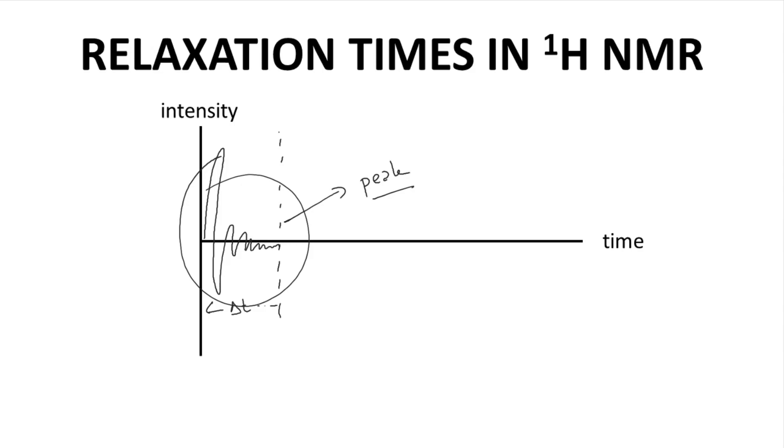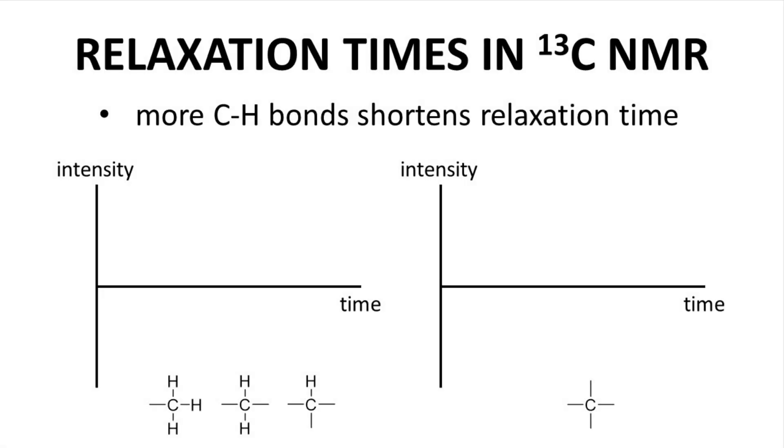How about C13 NMR? Here are two sets of axes. As it turns out, carbon nuclei that are attached to hydrogens generally release their energy faster. In other words, they ring louder and shorter.